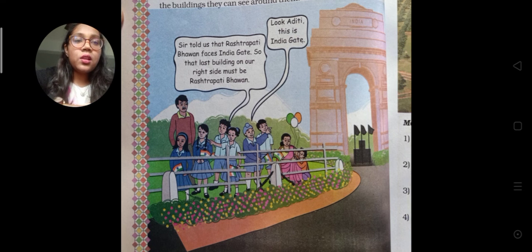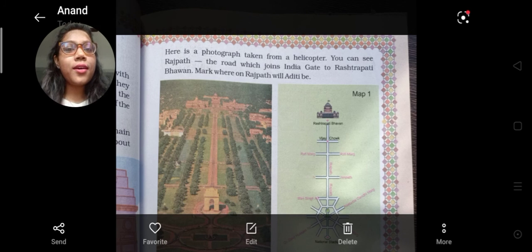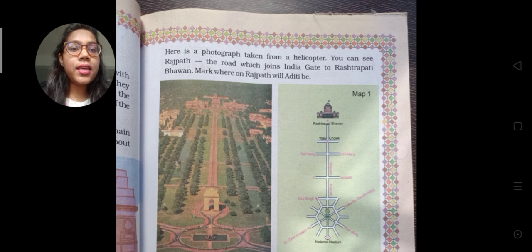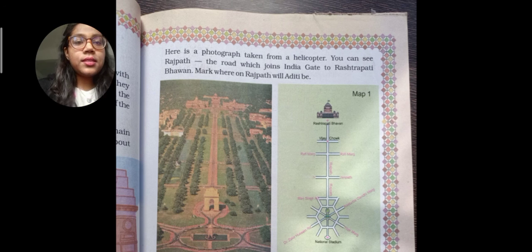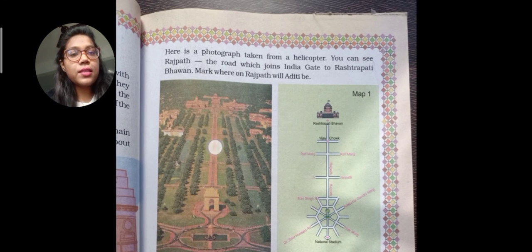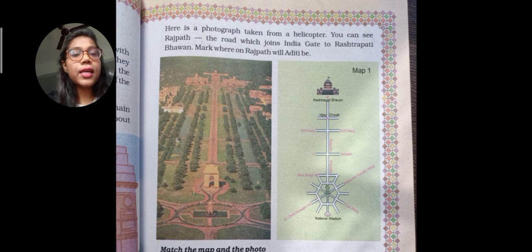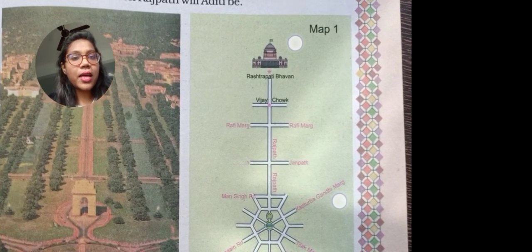One boy says, 'Look Aditi, this is India Gate!' On the other side, here is a photograph taken from a helicopter. You can see the Rajpath — the road which joins India Gate to Rashtrapati Bhavan. Now mark where Rashtrapati Bhavan will be on the map.